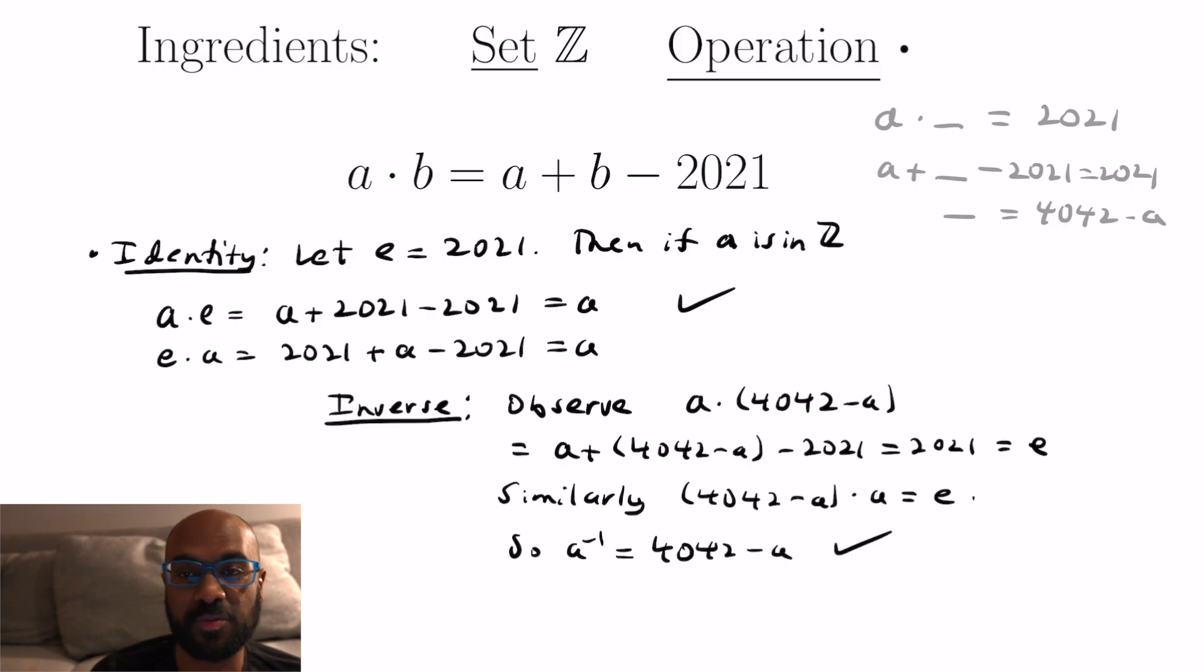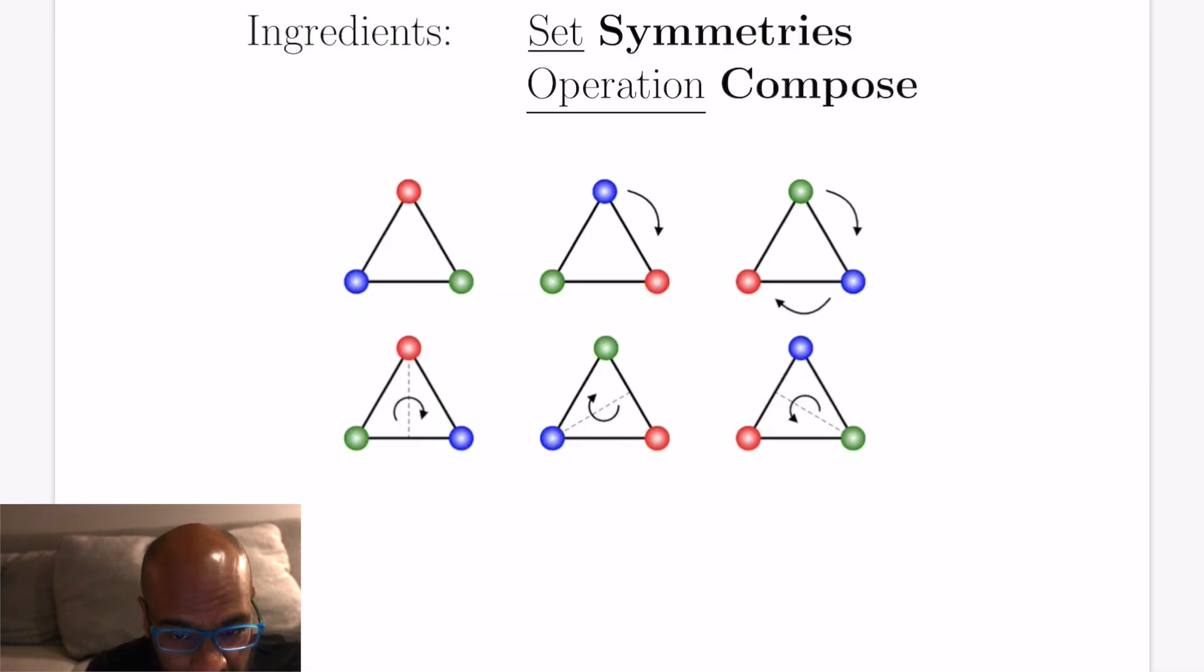We won't check associativity here, it's not too bad to check and so you end up getting a group. I didn't check closure either, you can see if you take a and b being integers the result you get a dot b will be an integer. So you have identity, inverses, we talked about closure, we talked about associativity and so we have a group. The thing here though is you get a sense of what it might be like to do a group theory homework problem at least in the introductory part of a group theory course but what are groups really good for?